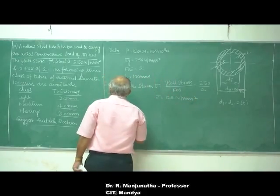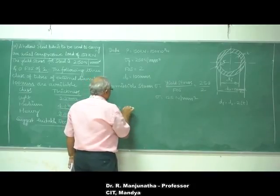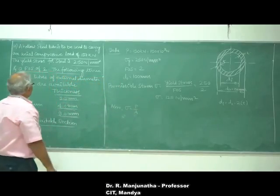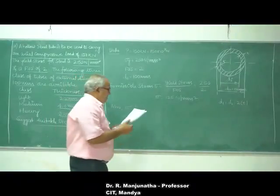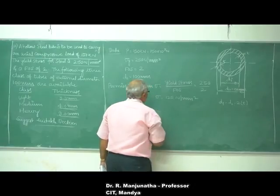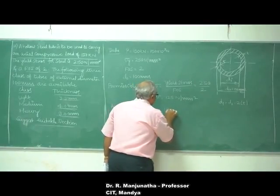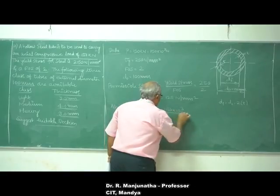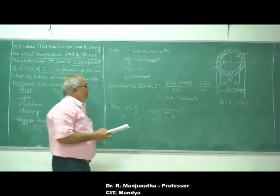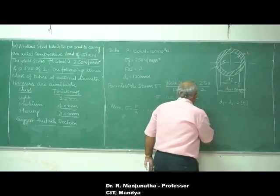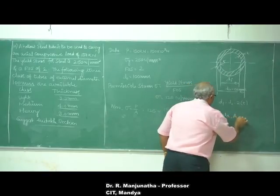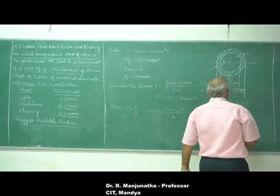We also know that σ equals P divided by area of cross-section. The permissible stress is 125 N/mm², and the load P is 150 × 10³ N, so 125 = 150 × 10³ divided by area A. Therefore the area of cross-section of the tube A equals 1200 mm square.